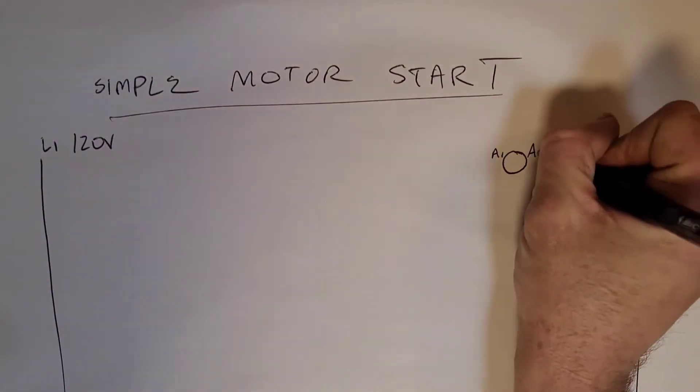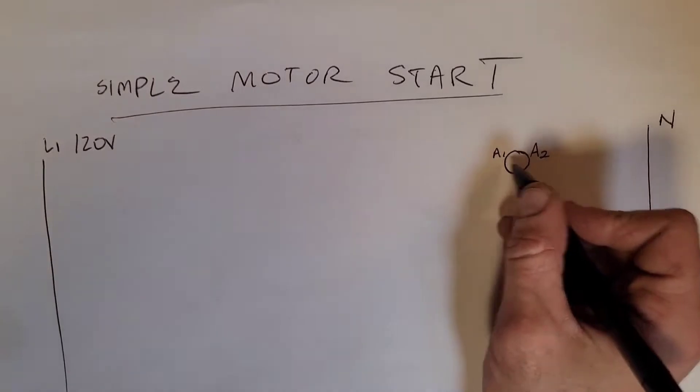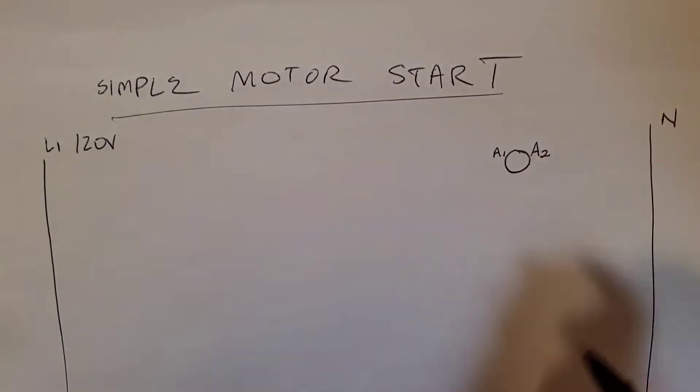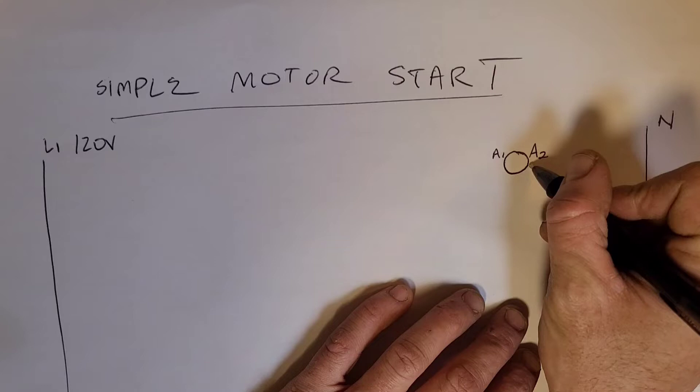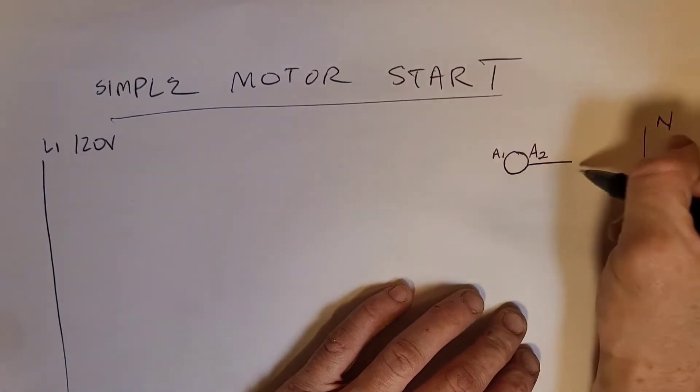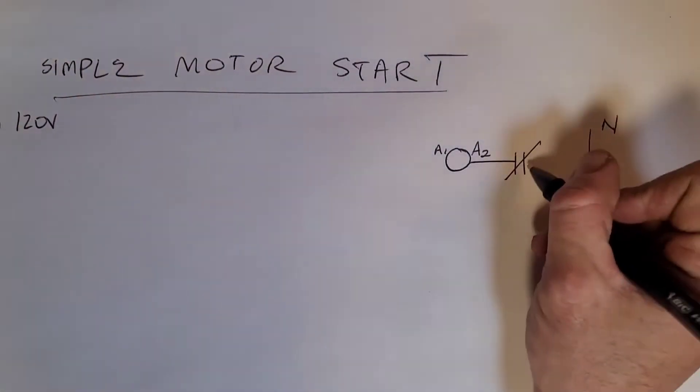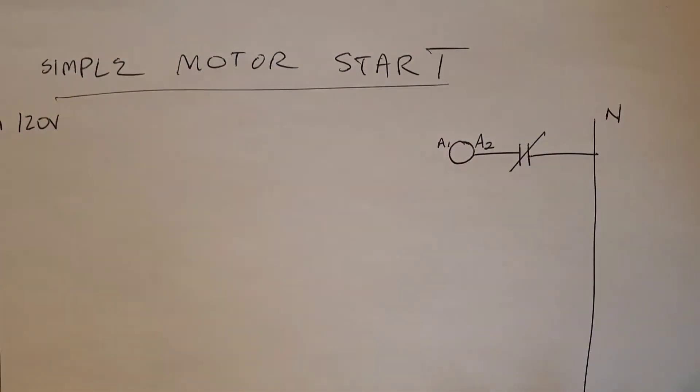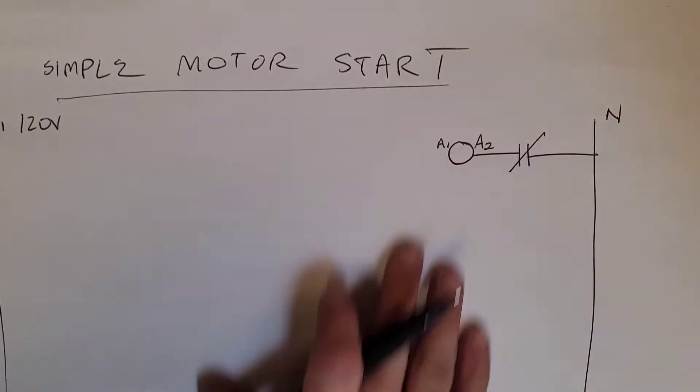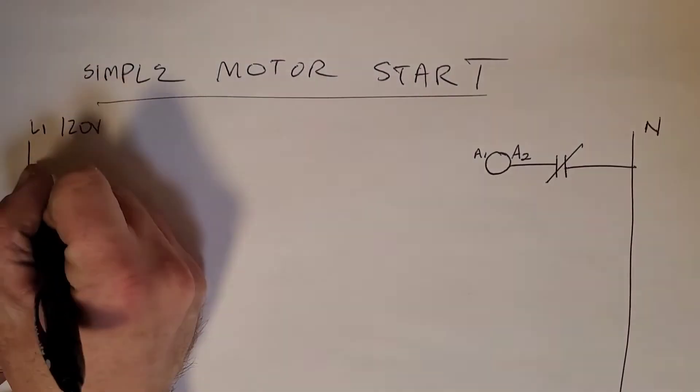This is the coil of our motor starter. Again, A1 and A2 is generally the coil on relays and motor starters. We are going to utilize the overload auxiliary contacts on the overload, but we can cover that a little bit later.